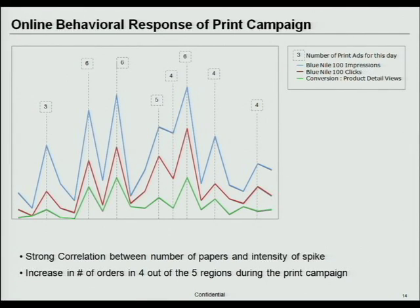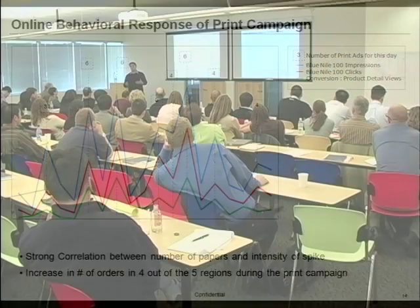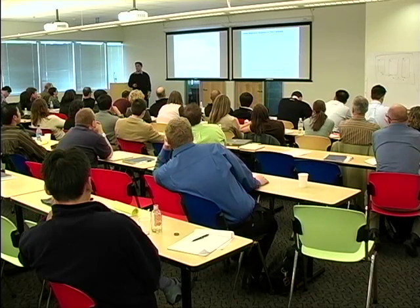This is a company that traditionally is all online — a very large jeweler spending most of their budget on online marketing — and they were doing this test with print. All of a sudden they saw they were able to drive new traffic to their site. Things that came out included the correlation with the total number of papers: six markets had a higher spike than four. So you're able to better understand what the impact of that advertising is.